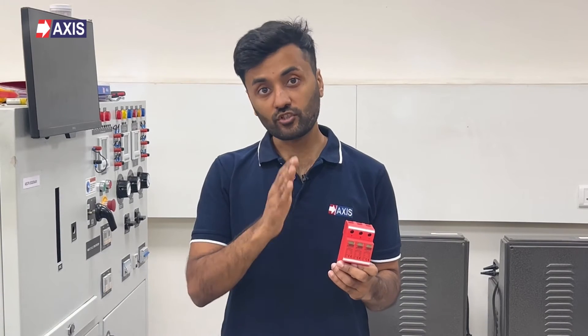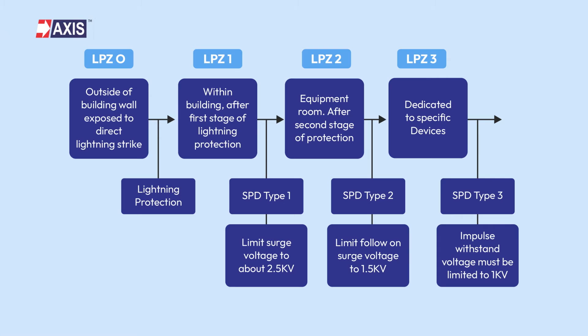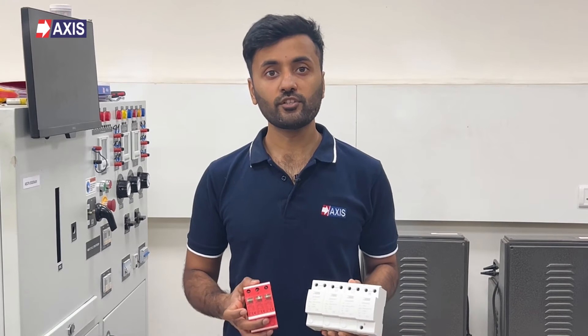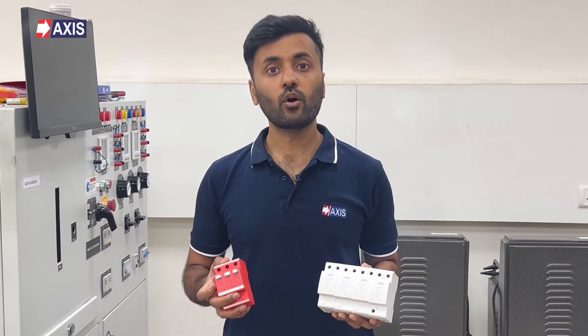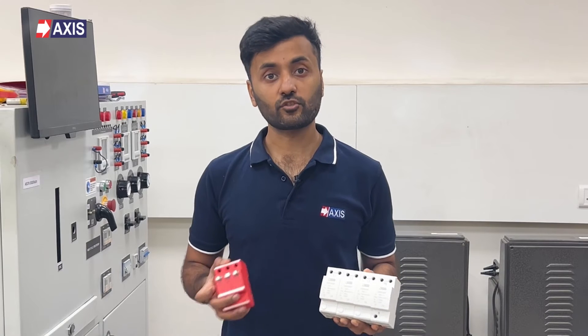Surge protection devices are used in areas where a transition takes place between two different lightning protection zones, as shown in this flowchart. For example, a Type 1 or Type 2 SPD would be used at the main power distribution switchboard where the electrical system enters the structure. For more information on lightning protection zones, please read our blog on the topic — the link is in the description.